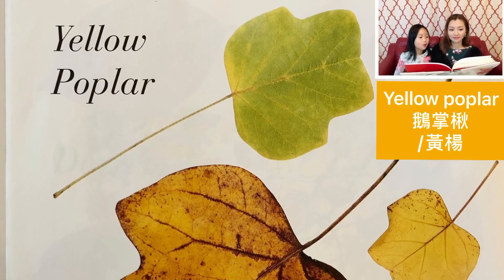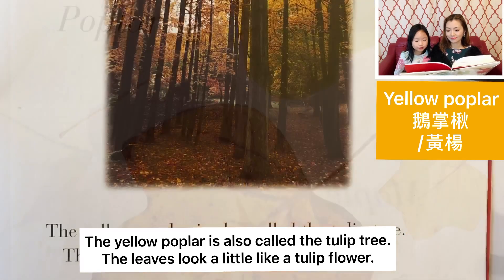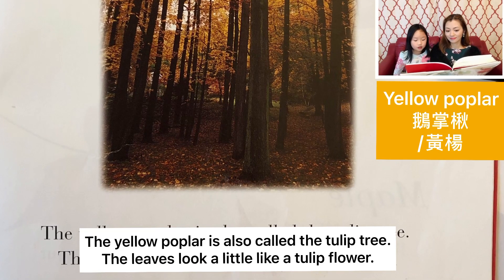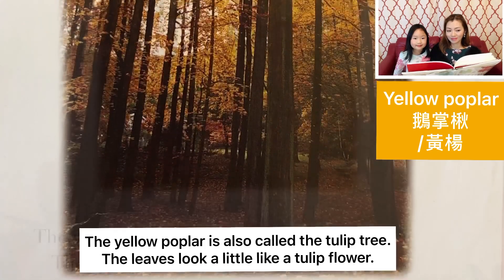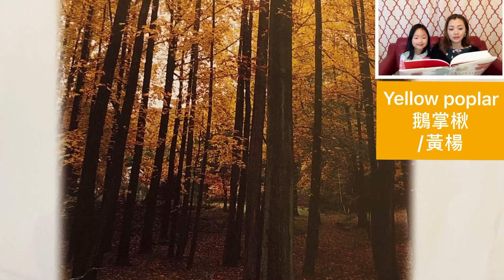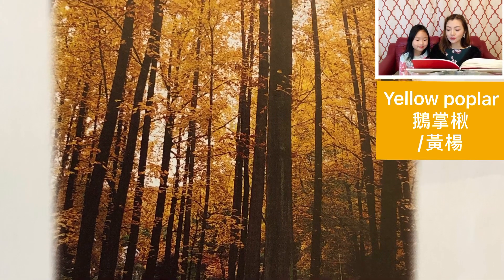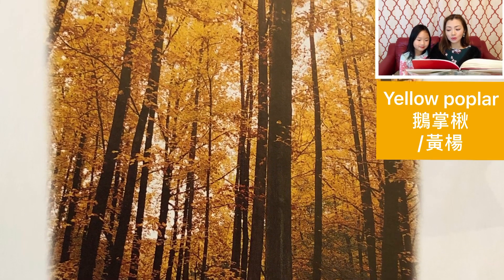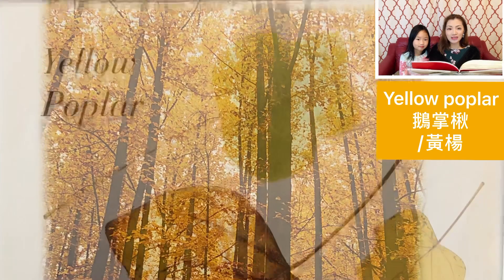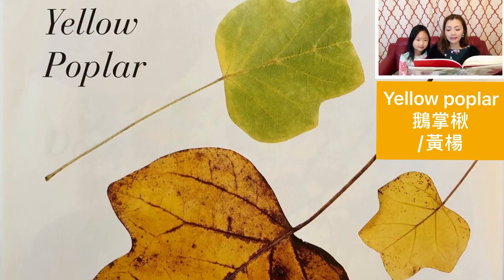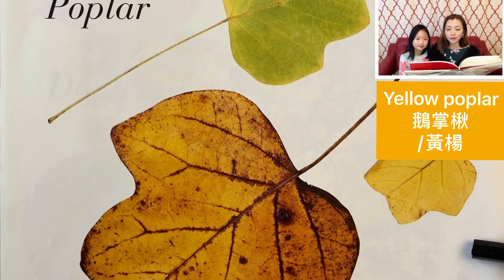Yellow poplar. The yellow poplar is also called the tulip tree. The leaves look a little like a tulip flower. 北美鹅掌楸，也叫做黄杨木。鹅掌楸也被叫做像郁金香一样的树，它的叶子看起来就像是一朵郁金香花。